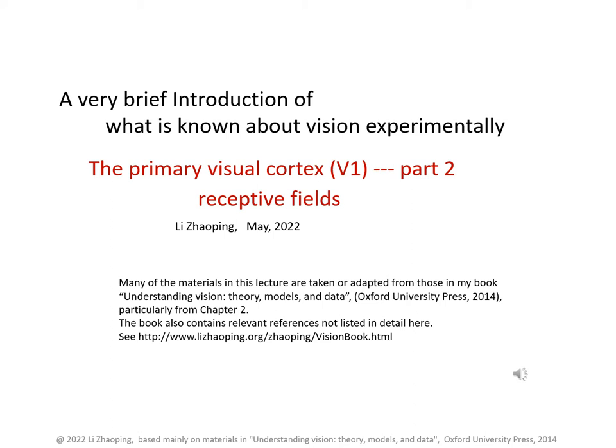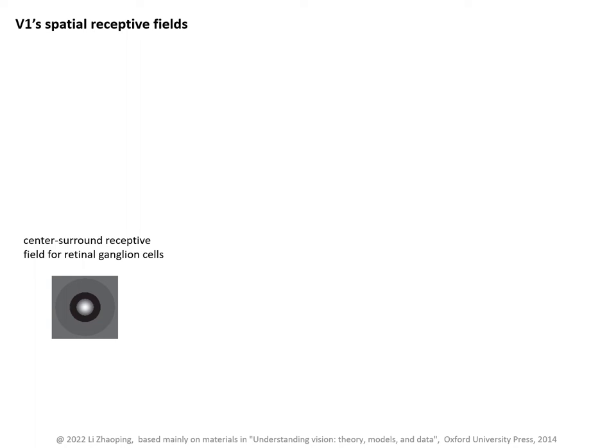Recall that retinal ganglion cells have center-surround receptive fields. In V1, many neurons have their receptive field as if made by adding a spatial arrangement of receptive fields together.